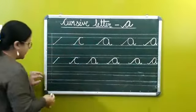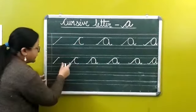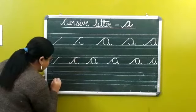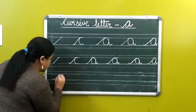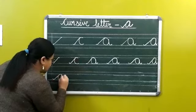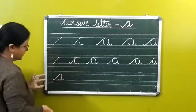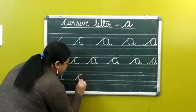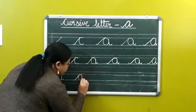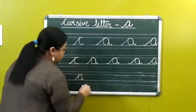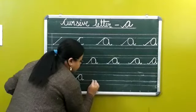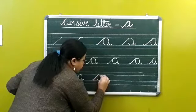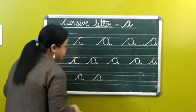I will write letter A. Make a C this way, go up, come down, make a tail. Small tail, slanting line, make a curve, go up, come down and small tail.